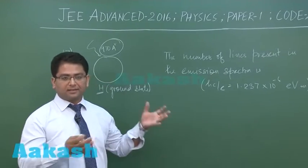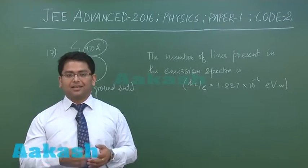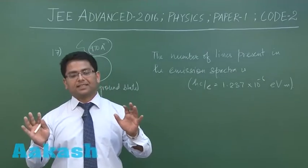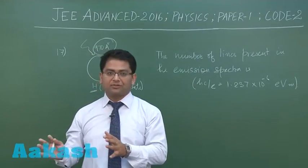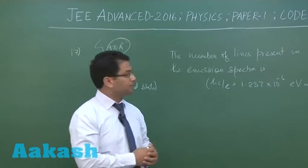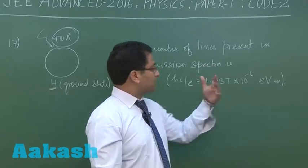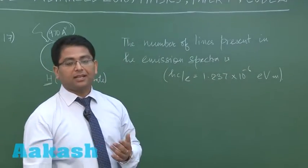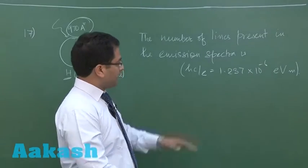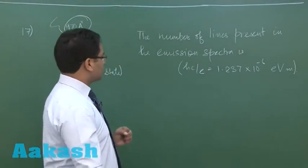Quite obviously, when this hydrogen atom is irradiated by light, the hydrogen atom would go to excited state. But we know the excited state soon would come back to ground state, and during that course, radiation would be emitted. And the question says the number of lines present in the emission spectra—in other words, how many unique wavelengths would be emitted. And hc by e value has been given; that would really make the calculation easier.